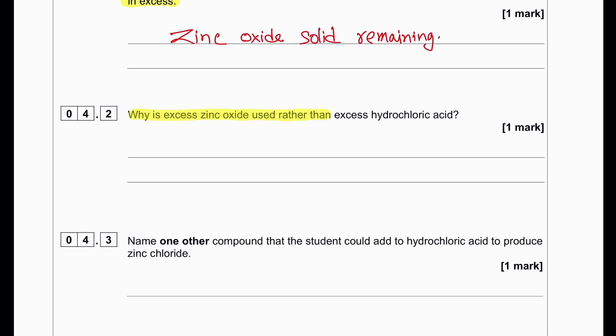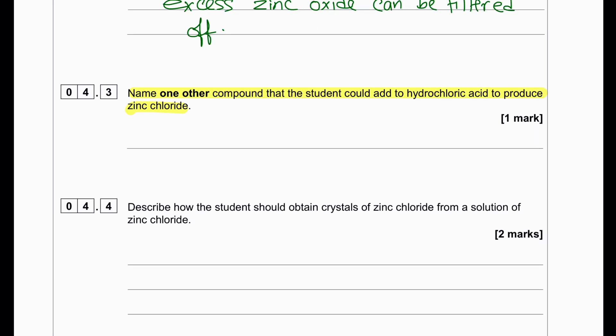Why is excess zinc oxide used rather than excess hydrochloric acid? We want to ensure that all the hydrochloric acid is reacted. Excess zinc oxide can be filtered up later on. Name one other compound that the student could add to hydrochloric acid to produce zinc chloride. Instead of zinc oxide, we can add zinc carbonate or zinc hydroxide.